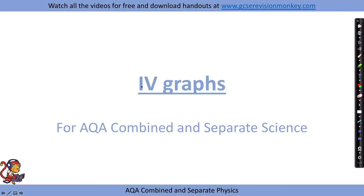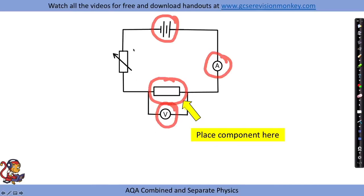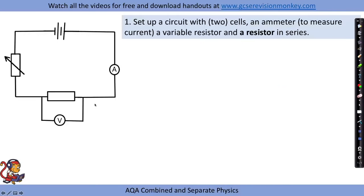For the IV graphs required practical - also called current-potential difference graphs - the circuit setup remains the same throughout; what changes is the component being investigated. We set up a basic circuit with a battery or cells, an ammeter to measure current, a voltmeter to measure potential difference, and a variable resistor which allows us to change the resistance and therefore the current. We start by drawing an IV graph for a resistor, with the goal of plotting current against potential difference.